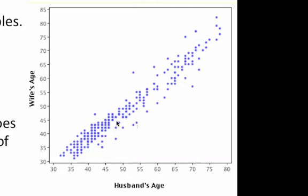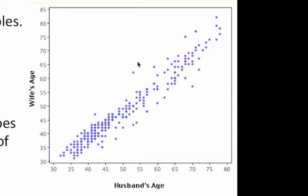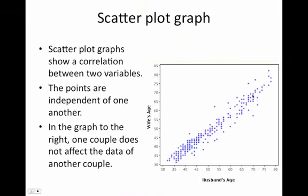What you're looking for in a scatter plot is a trend. It does not show causation — it only shows correlation, meaning one thing correlates to another. In this graph, husband's age and wife's age have a very positive correlation. If the husband is 75, it's not very likely he's married to a 35-year-old, so you don't see any dots there. You see a 75-year-old married to perhaps a 58-year-old. There are a few outliers, but for the most part it falls along this trend.